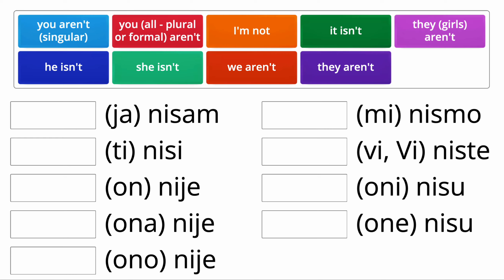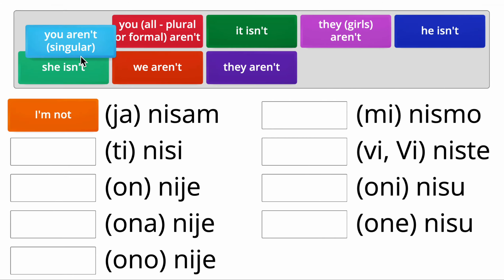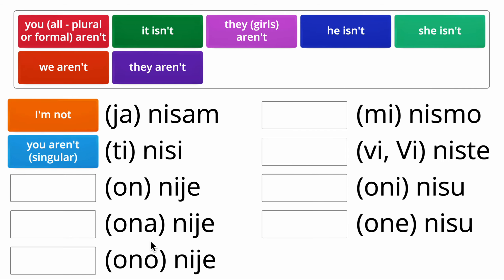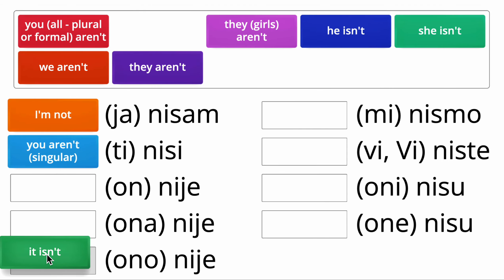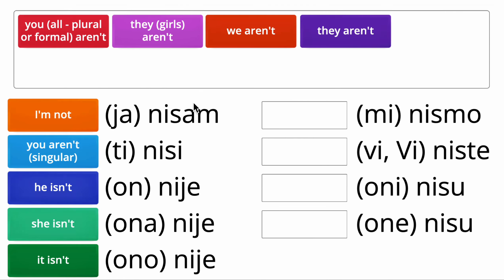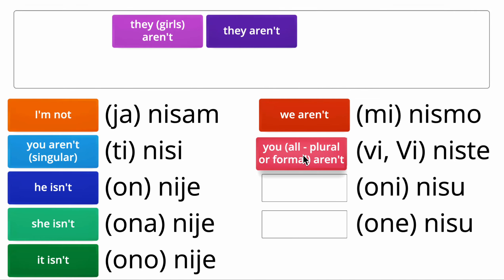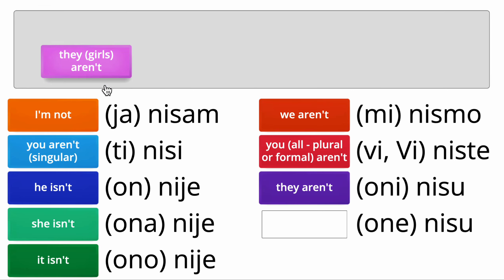Negative form of the verb biti. We make the negative form by adding ni- before the short form. So, sam becomes nisam, si becomes nisi, he isn't, she isn't, it isn't — nije — and then we have the plural: nismo, niste, and nisu.